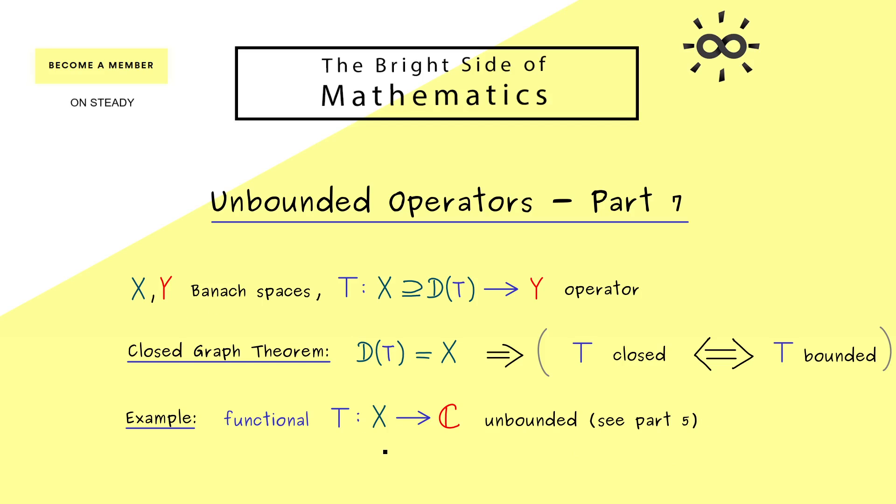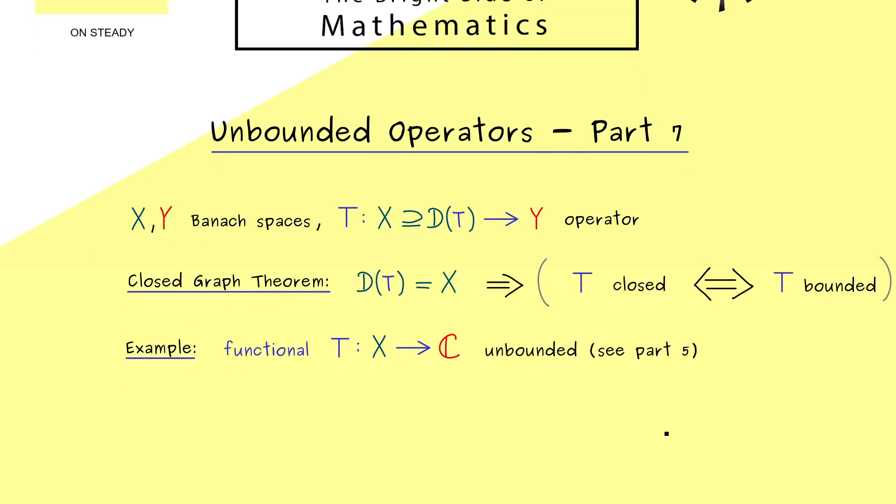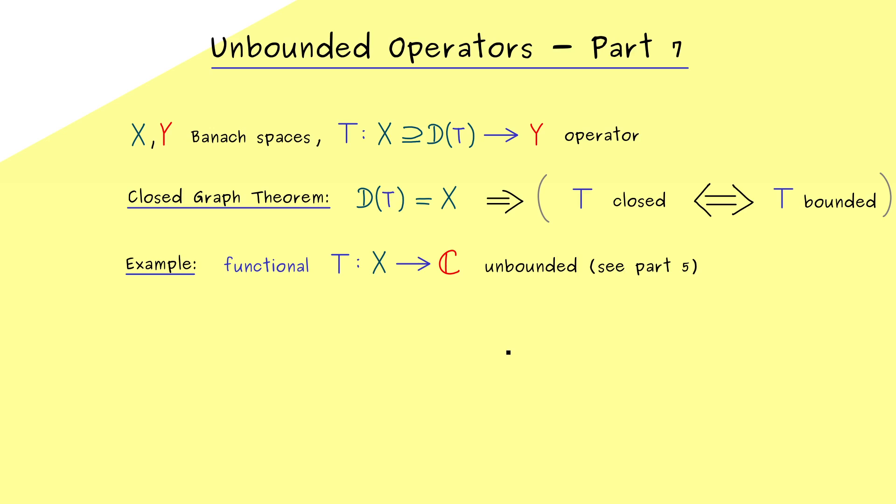The only thing we need is that X is infinite dimensional such that we can define such an unbounded functional. Moreover we can use the same proof as in part 5 to show that every unbounded functional is not closable. However we can also see that in another way because we can always extend the definition of a functional.